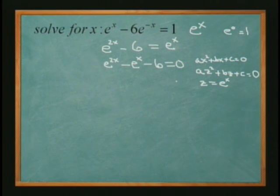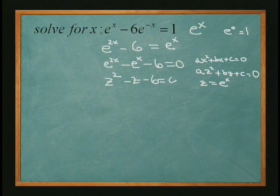All right, so let's substitute that in. We get e to the 2x, that's really z squared. e to the x is just z. And we get our constant equal to 0.